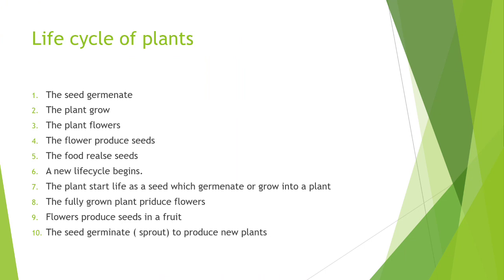Now we will see what the life cycle of plants is. I have arranged points so you can easily understand. The seed germinates, then seedlings grow, then the plant grows, then seeds are released from the fruit, and then a new cycle begins. For example, with a mango: the seed is placed in the ground, the plant grows, then a flower grows, then fruit is made, and then the seed is made again.